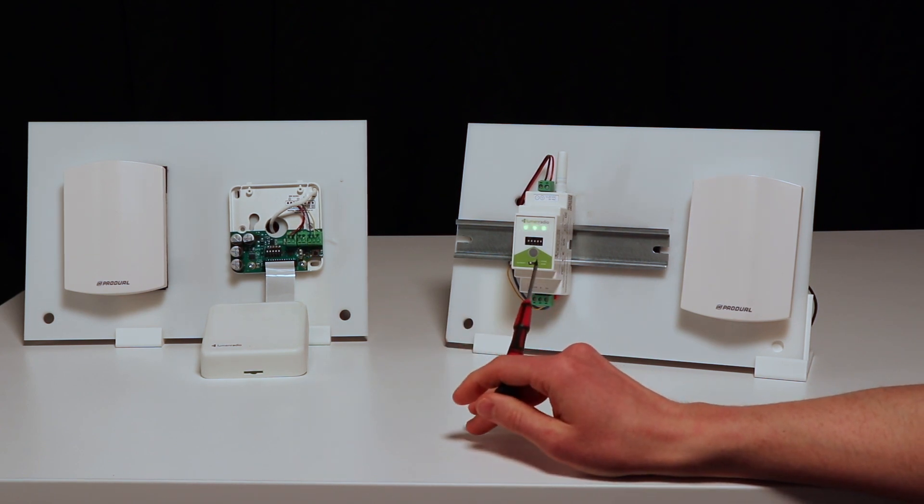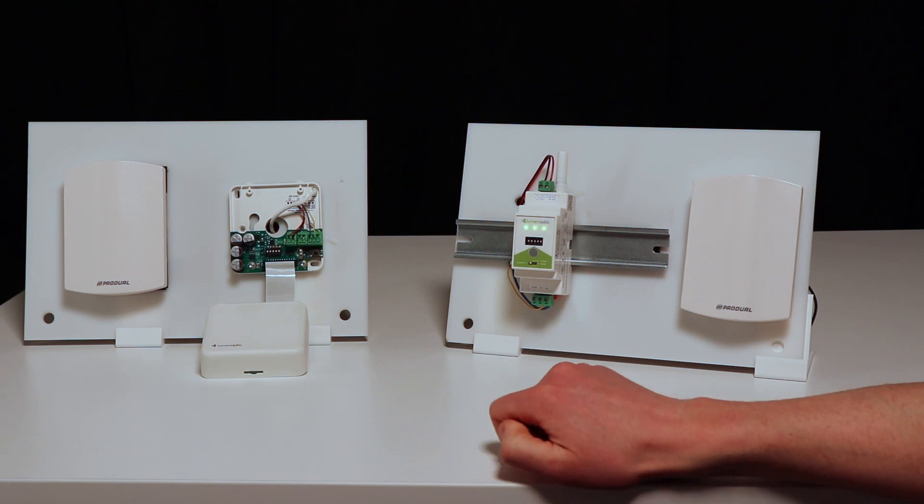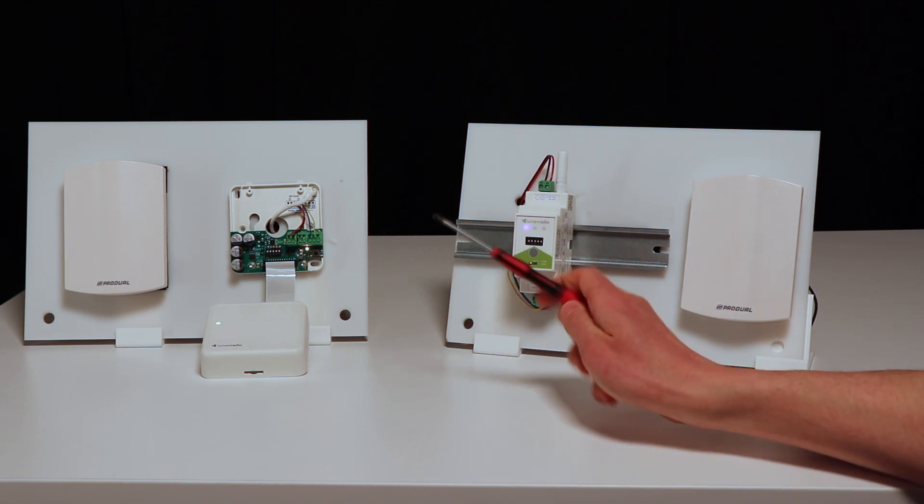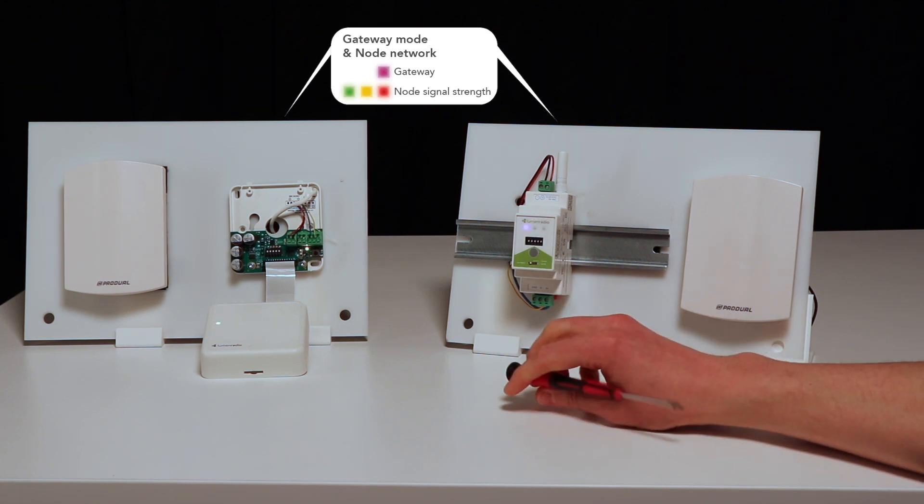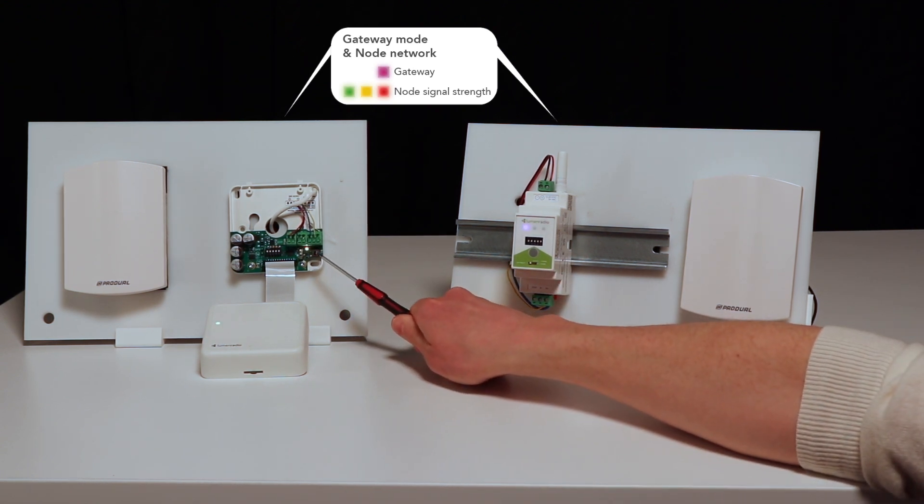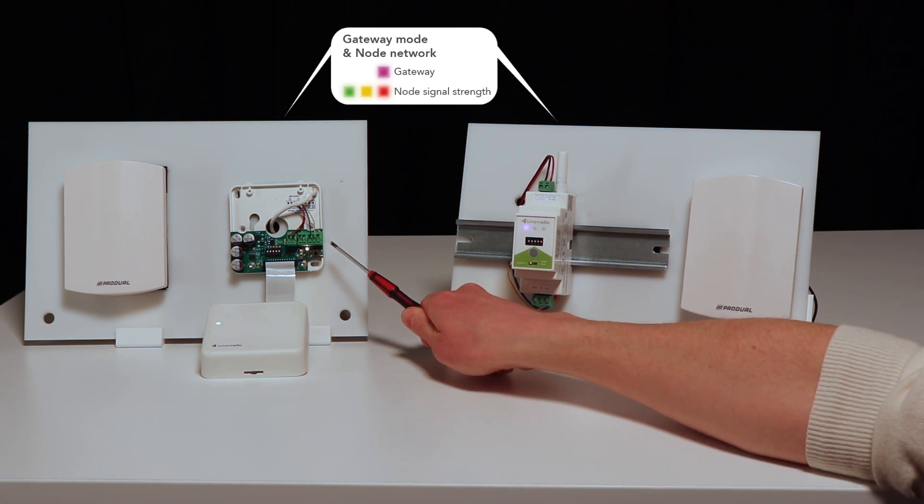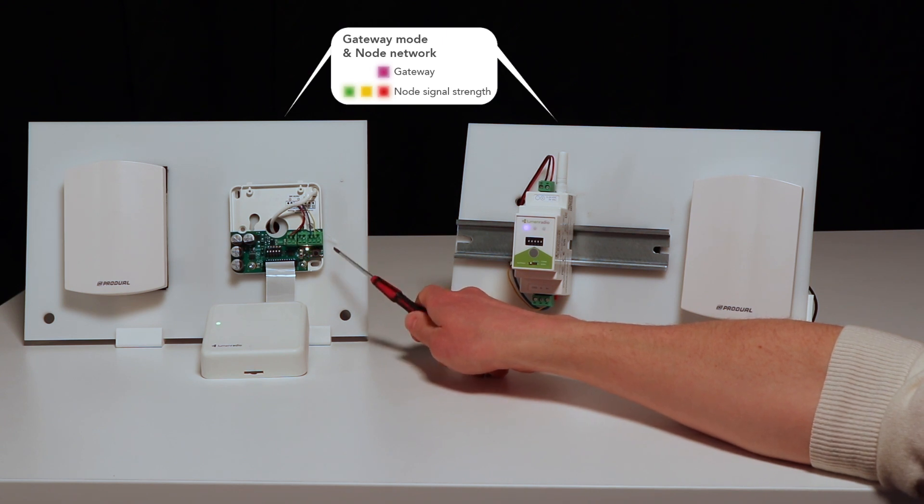All devices will then flash yellow, indicating that they are restarting to rejoin the network. The gateway will put itself into magenta, indicating that it is a gateway, while the nodes will start with flashing yellow to indicate that they have no network right now. They're searching for the network they have been assigned to.